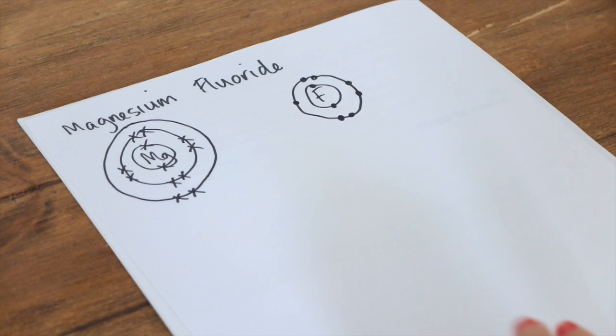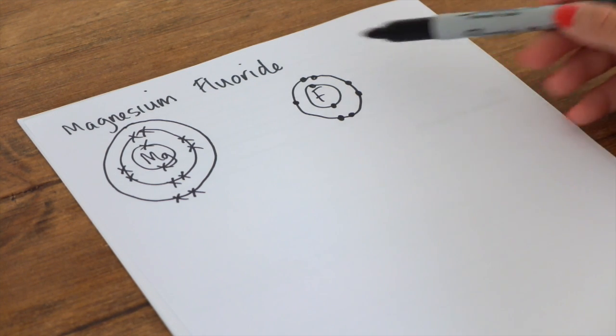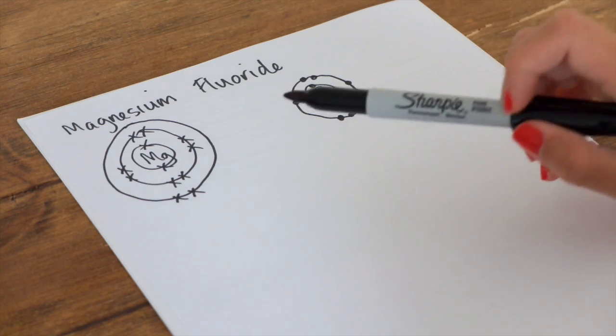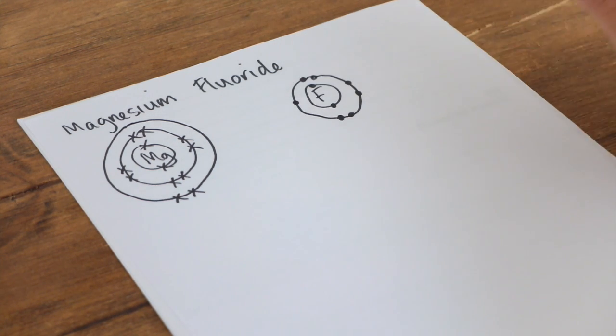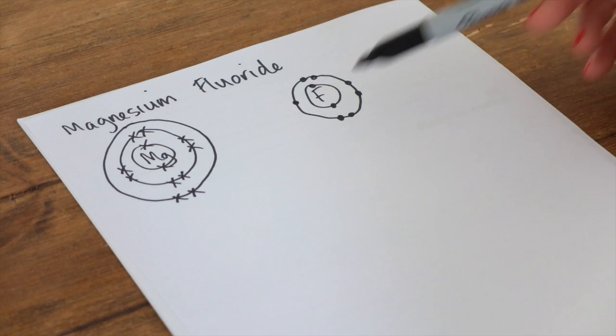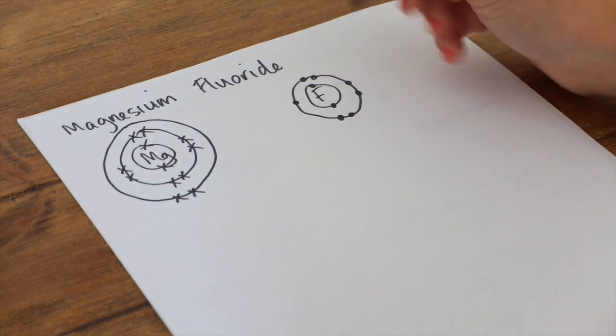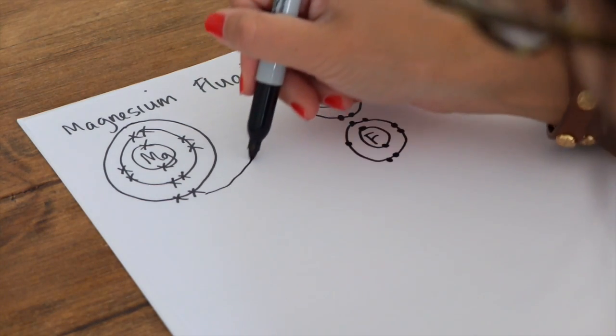Okay, so stepping back, we can see that magnesium has two electrons in its outer shell. It will choose to lose those two electrons. Fluorine has seven electrons in its outer shell, and it will want to gain one. However, the problem here lies in the fact that magnesium has two to give away. So in this case, we need two fluorine atoms, because then one electron can go here, and one electron can go here.